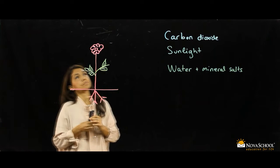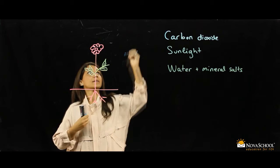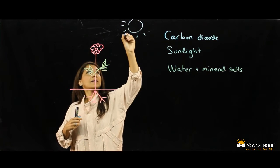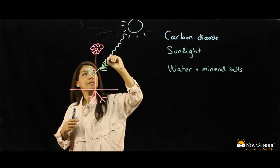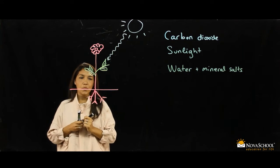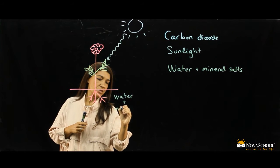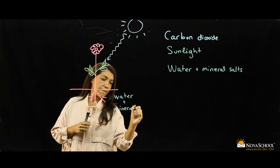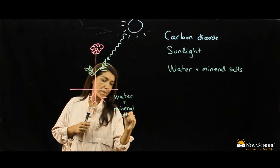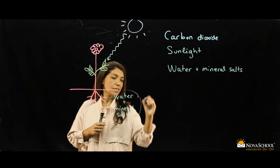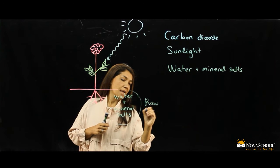We have the sun here, up there, and the sunlight. We have water and mineral salts in the soil. This mixture is called raw sap.